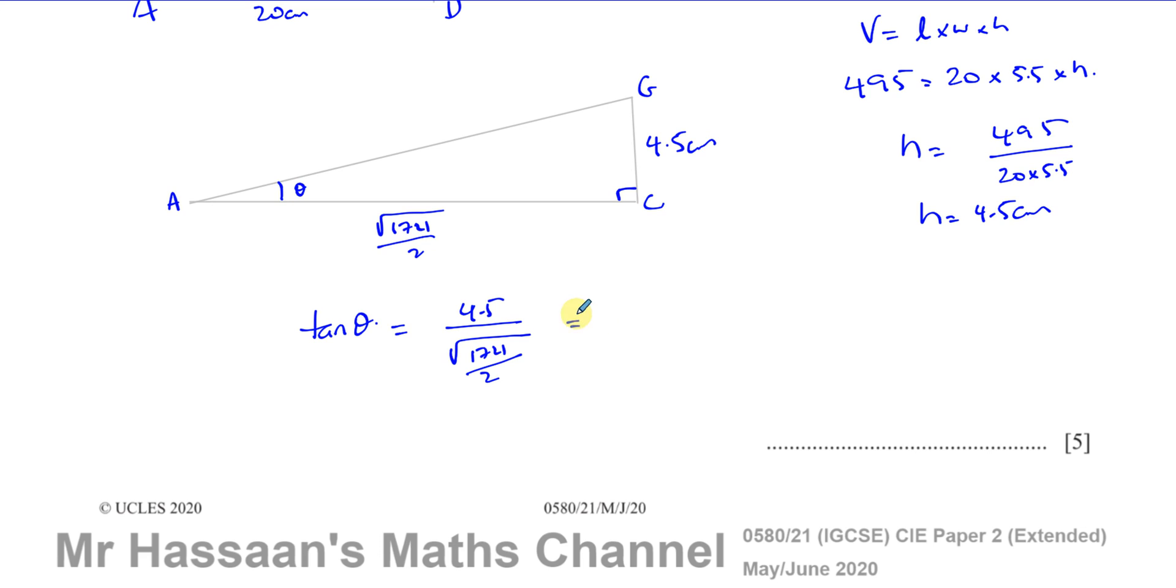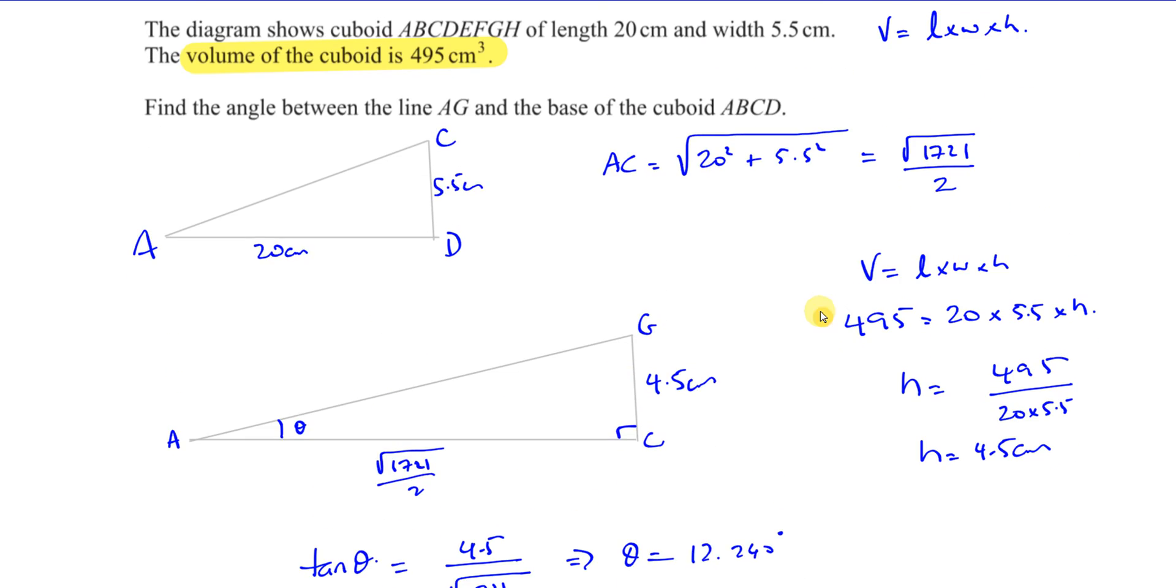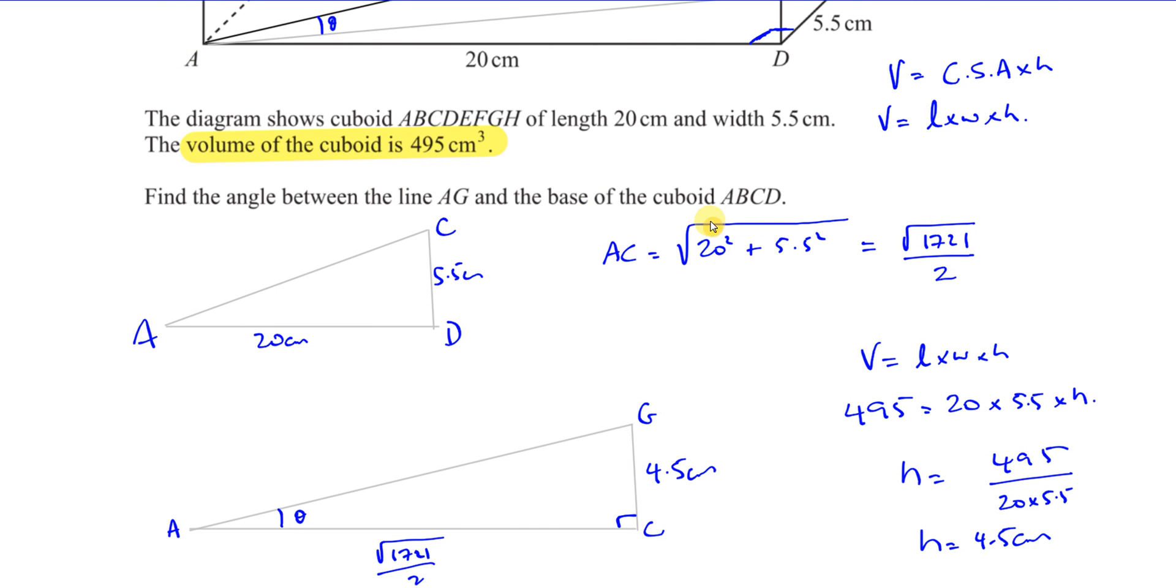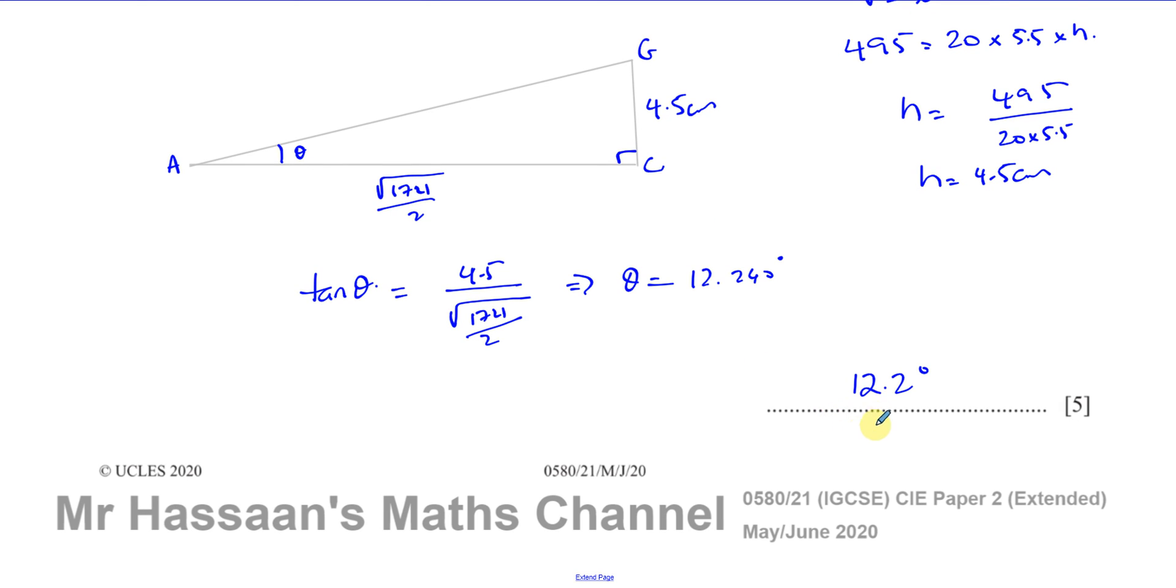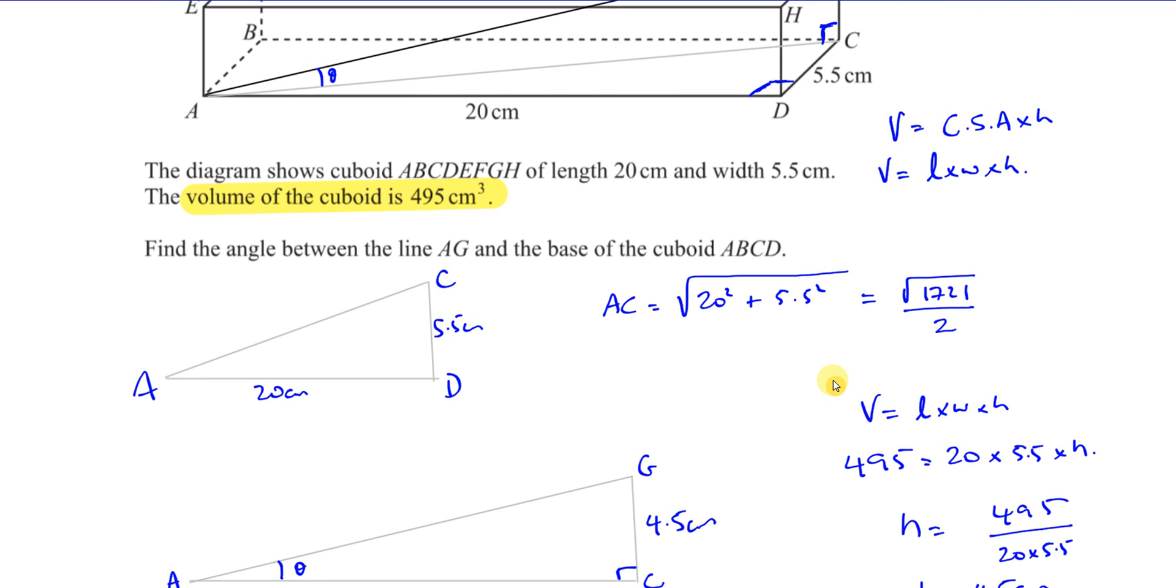And then you put equals, and it gives you 12.240. So therefore, theta equals 12.240 degrees, which you round to one decimal place unless otherwise stated. So there's the answer, 12.2 degrees, and that's the end of this question number 19.